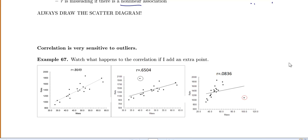And we mentioned that correlation is very sensitive to outliers. So let's see why. So watch what happens to the correlation if I add an extra point. So here's our original data with a correlation of 0.8649.